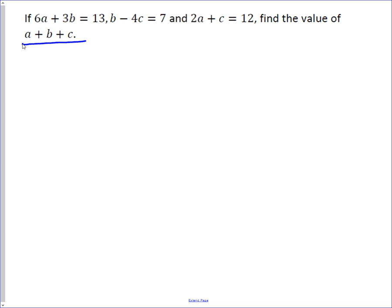So instead, we start by looking, is there a way to combine these terms: 6a plus 3b equals 13, b minus 4c equals 7, and 2a plus c equals 12? Is there a way to combine these in such a way that we can calculate a plus b plus c without actually knowing the three variables?